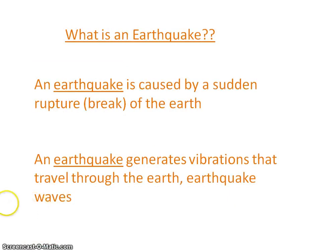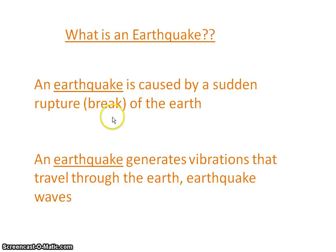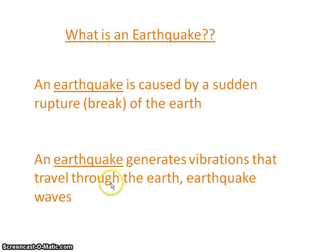An earthquake is caused by sudden rupture of the earth — that is a sudden break of the earth. An earthquake generates vibrations that travel through the earth, called earthquake waves. It acts like a force acting horizontally on the structure. In civil engineering, this is called a seismic wave.